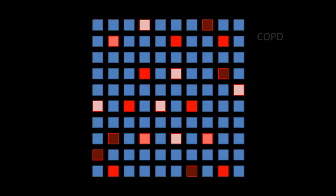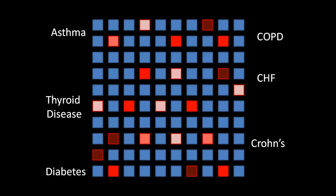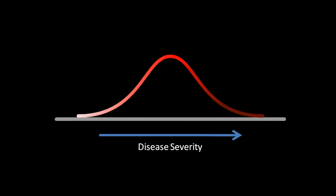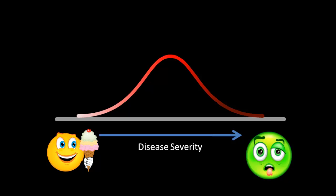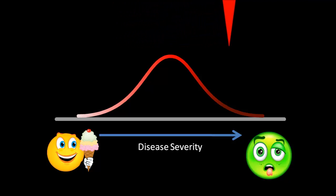More often, though, there's a spectrum of disease with some patients having very mild disease and some patients having very severe disease. This includes diseases like asthma, COPD, heart failure, Crohn's, and diabetes. You have a spectrum from people who are completely asymptomatic to people who are very, very sick. Somewhere along the spectrum should be a cutoff of where you start defining a disease state, and this is different for every disease, sometimes based on the therapies available, the symptoms, or prognosis.